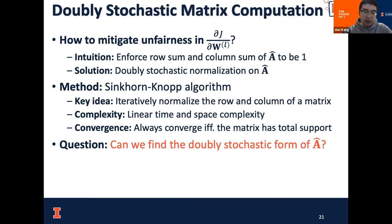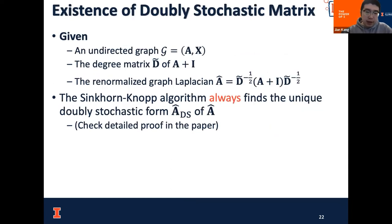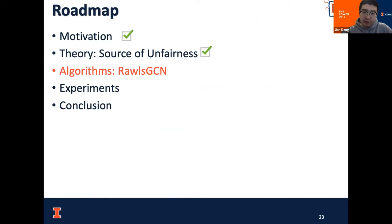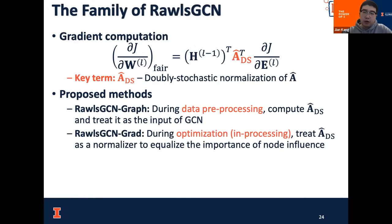To compute the doubly stochastic matrix, we use the Sinkhorn-Knopp algorithm, which provides a nice theoretical guarantee on convergence. In our paper, we prove that for the specific renormalized graph Laplacian A-hat, we can always find a unique doubly stochastic matrix using this algorithm. Based on our findings about the source of unfairness, I will now present our method named Rawls GCN to mitigate such unfairness. Our Rawls GCN is developed on the basis of this gradient computation, and we apply doubly stochastic normalization to mitigate the impact of node degree.